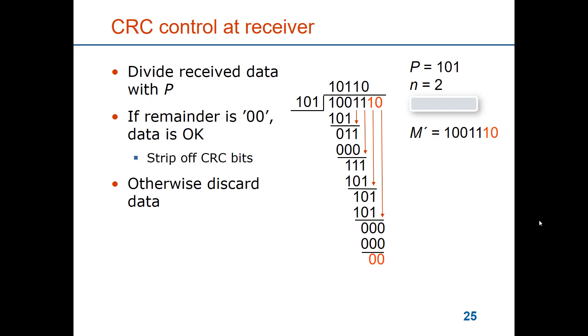So on the receiver side it receives the message 1001110. Now it wants to check whether it's been correctly received or not. So it takes the same generator 101 and it divides the incoming message with 101, and it checks not the quotient but the remainder. And if you follow through the computation here you see that the remainder in this case is 00, which means that the message has been correctly received.